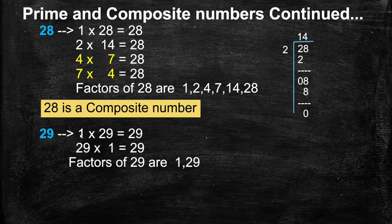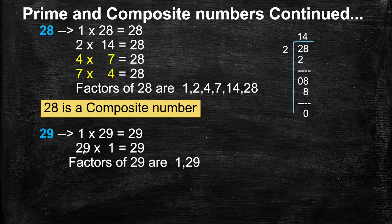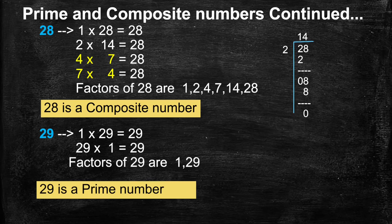Next, 29. 1 is a factor of every number, so 1s are 29, 29. 29 is not a multiple of 2 because the ones place is not an even number. 29 is not a multiple of 3. 29 is a multiple of 29 only, which is 29s are 1, 29. Now we got all the factors of 29: 1 and 29. Factors of 29 are 1, 29. Since a number with only 2 factors is called a prime number, 29 is a prime number.